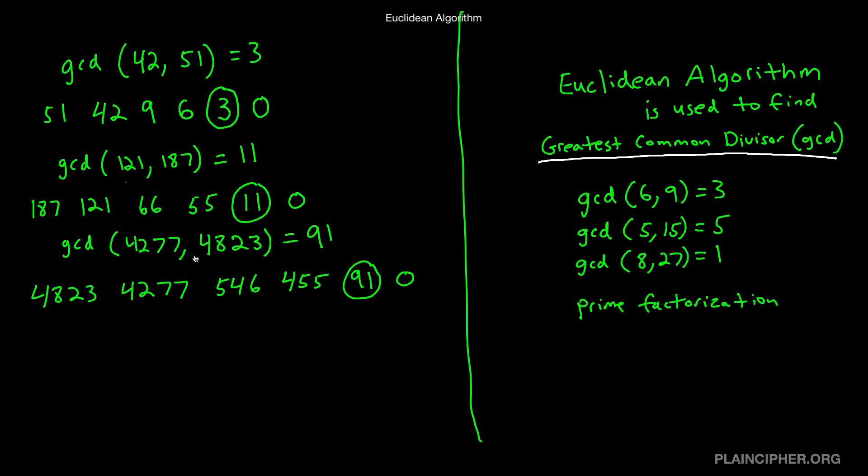And for a number like this, you do not want to be doing prime factorization. It is very tedious and very slow. So do not use prime factorization for GCD.